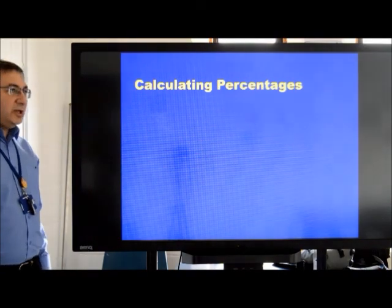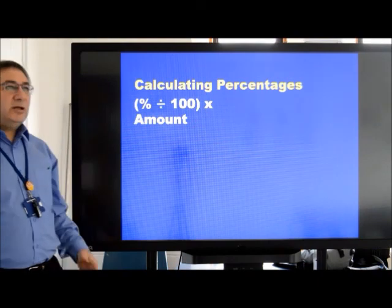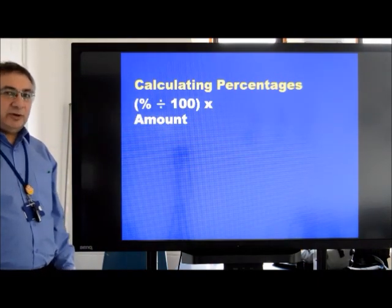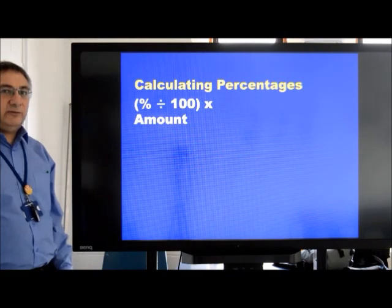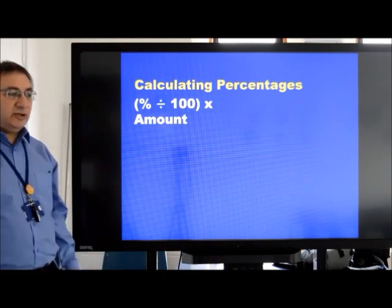So here's some examples and how we go about calculating it. First of all, there is a formula that you need to remember. The percentage that we're looking for, if that is divided by one hundred and then multiplied by the amount of which we're trying to find the percentage, that formula will work every time.